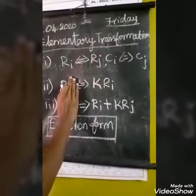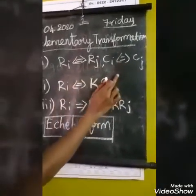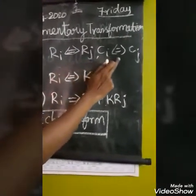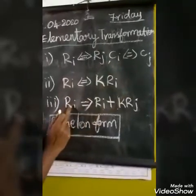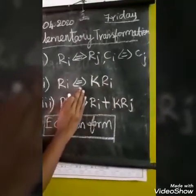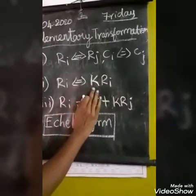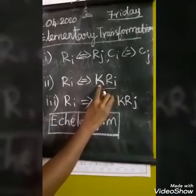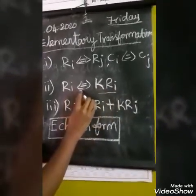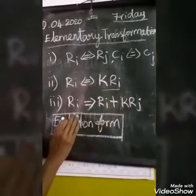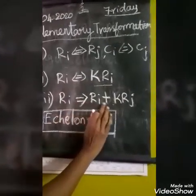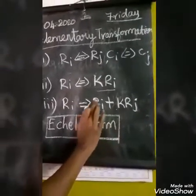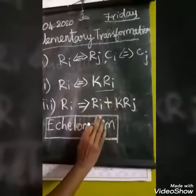The three elementary transformations are: first, interchange of any rows or columns — Ri equals Rj, Ci equals Cj. Second, multiplication of each element of a row by any non-zero scalar k — Ri equals k·Ri. Third, addition to the elements of any row or column the same scalar multiples of corresponding elements of any other row or column.